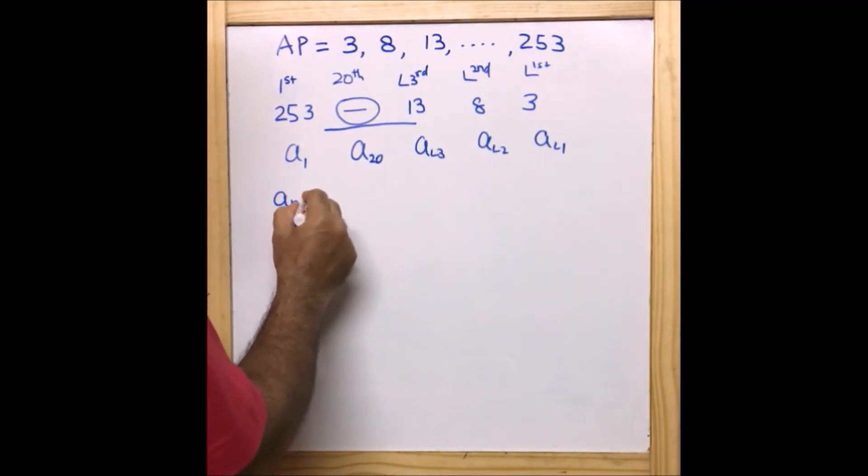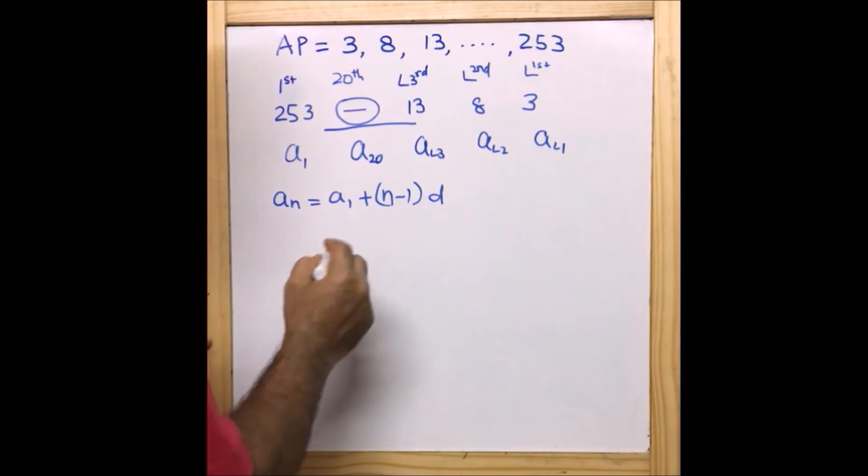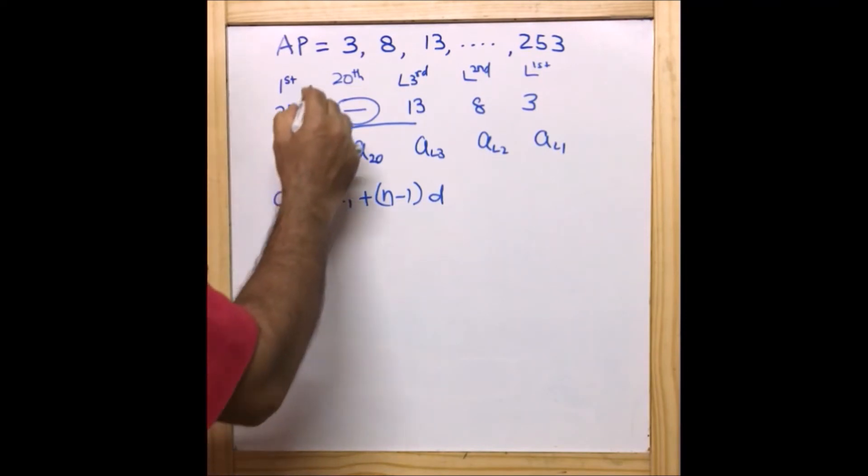Now we are going to use the formula a_n = a_1 + (n-1)d. Here we are going to find out first d. Once we get the d, then the equation will become very easy for us to calculate and work out.